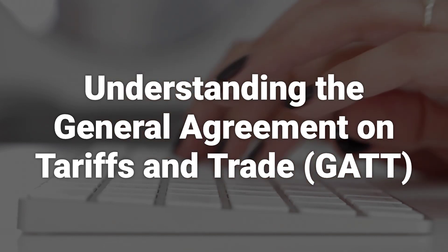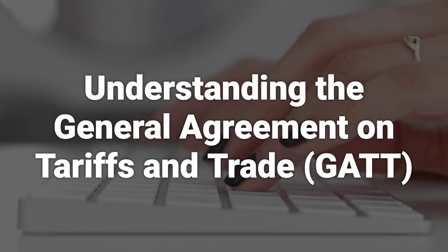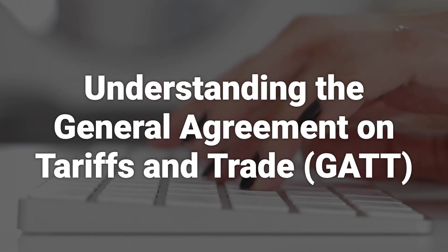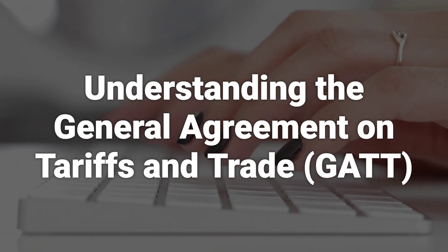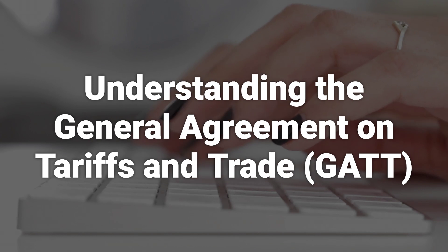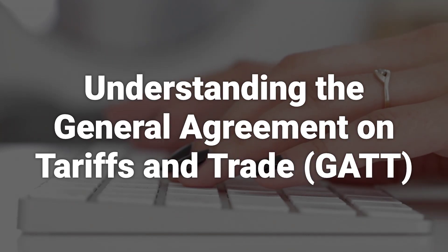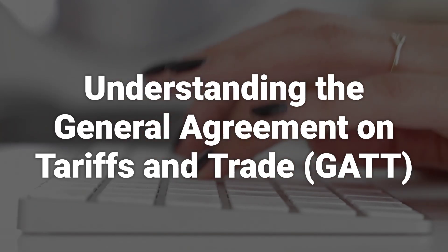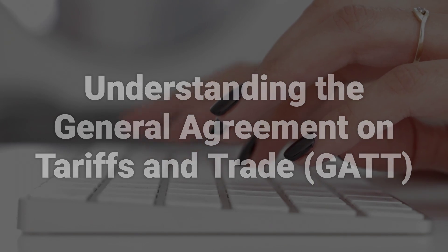The GATT was created to form rules to end or restrict the most costly and undesirable features of the pre-war protectionist period, such as trade controls and quotas. One of the key achievements of the GATT was trade without discrimination, known as the Most Favored Nation Principle.